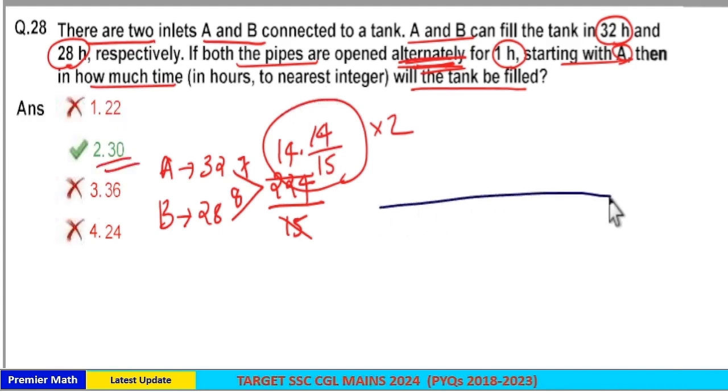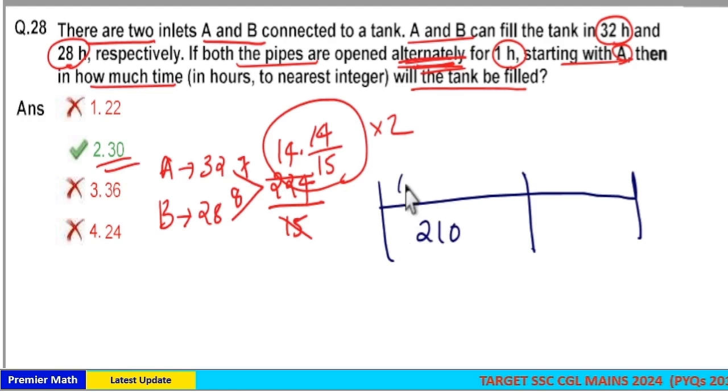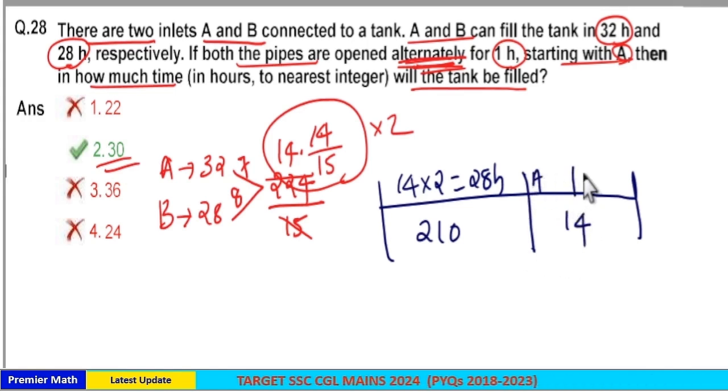Here together A and B take 14 hours to fill 210 units of water. So separately they will take 14 into 2, 28 hours to fill 210 units of water. Remaining is 14 units which will be filled by A and B.